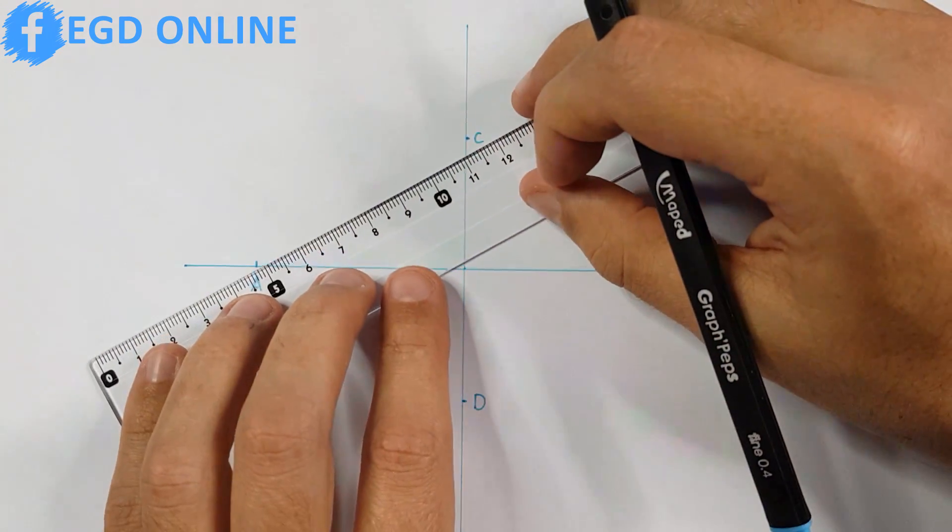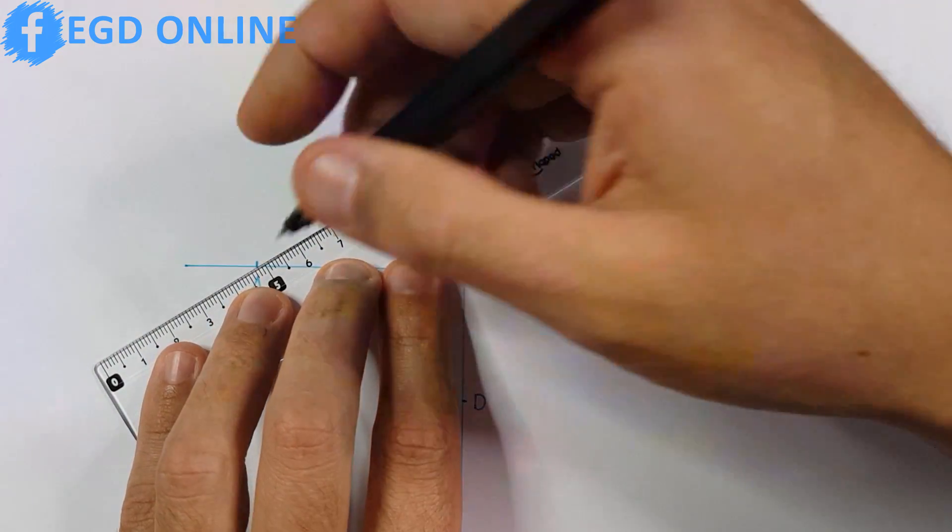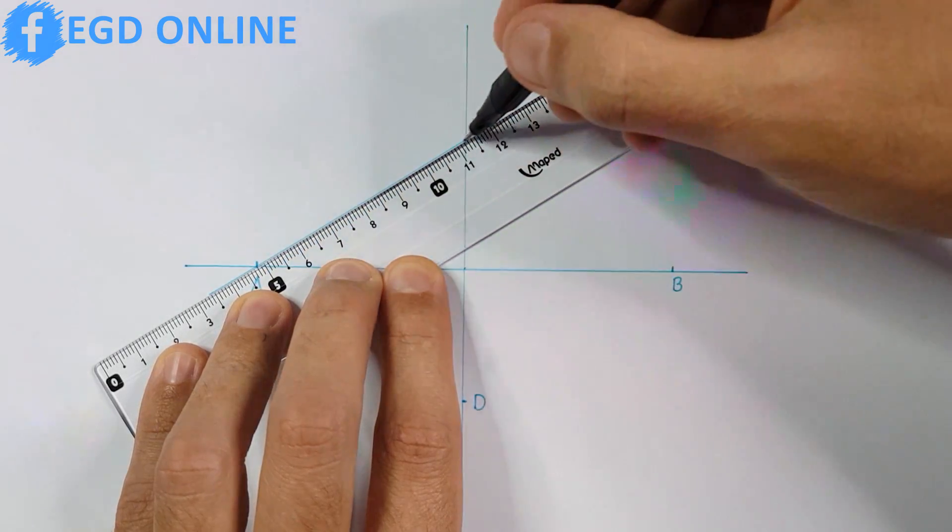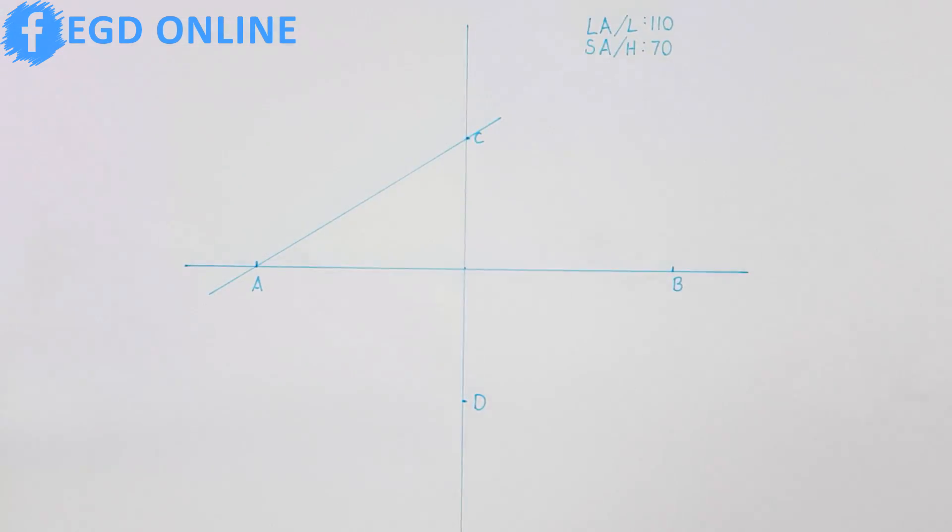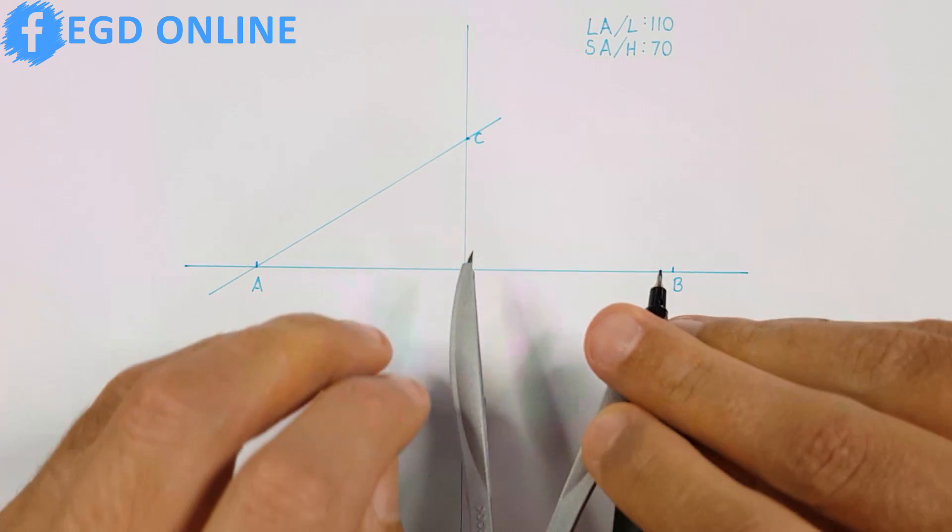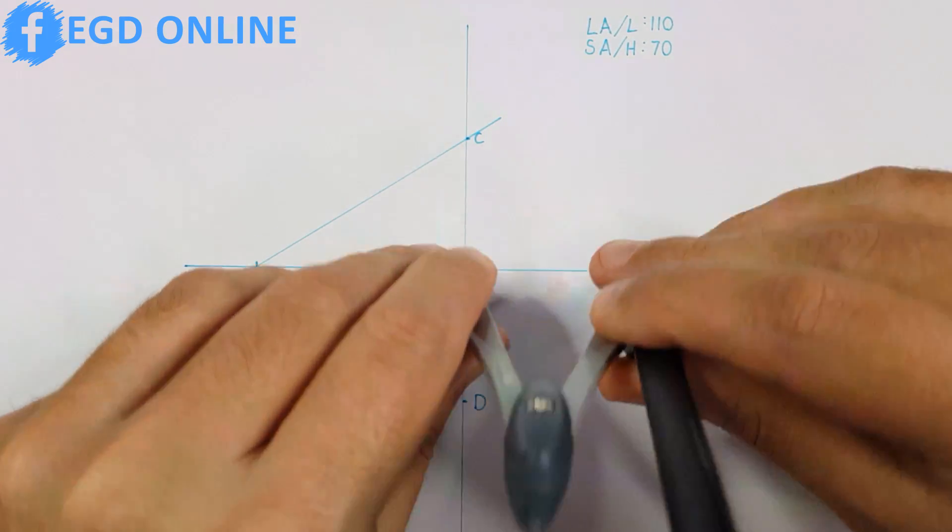First I will join point A and C with a construction line. Then I will place my compass on the middle point and project point B onto my minor axis.